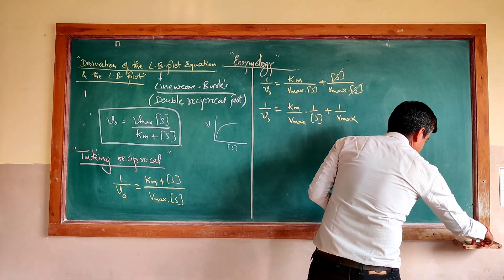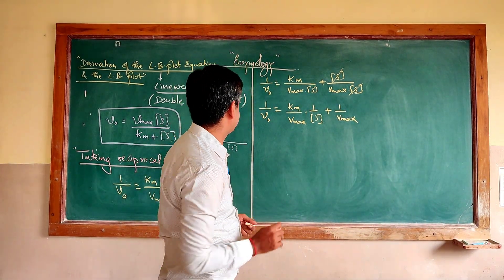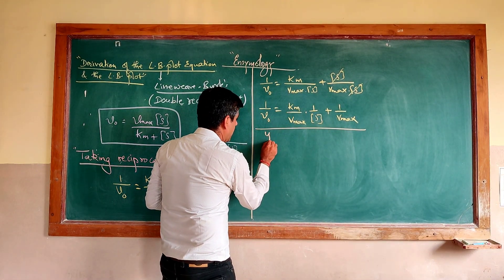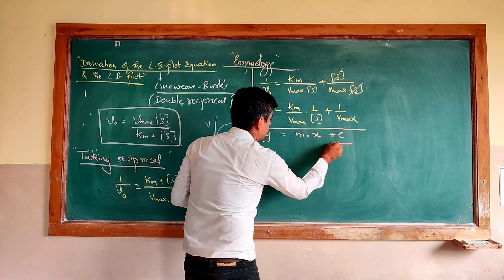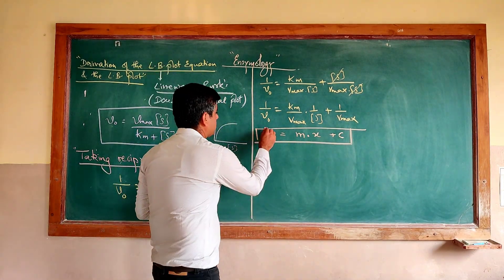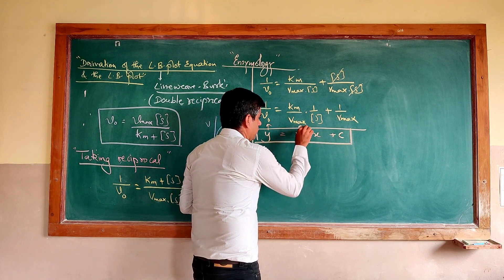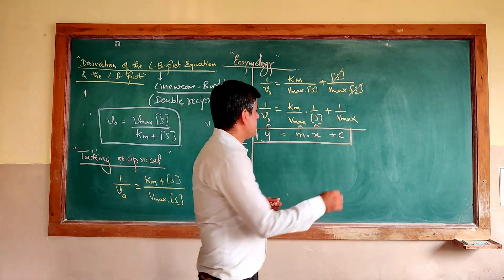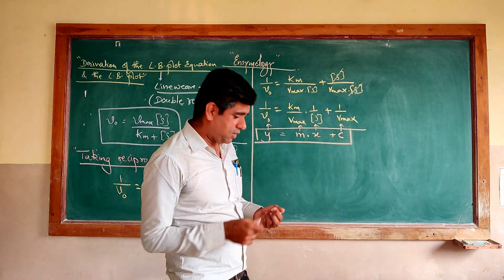If you look at this equation, some of you who studied mathematics will recognize this is the equation of a straight line: Y = mX + C. So here, Y-axis is 1/V₀, the slope (m) is Km/Vmax, the X-axis is 1/S, and the intercept on the Y-axis (C) is 1/Vmax. Simple.